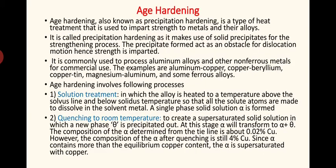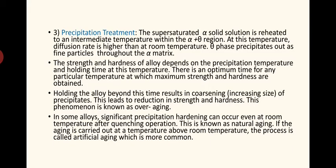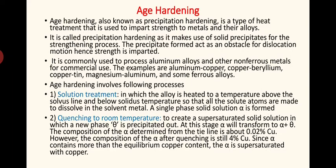In age hardening there are three steps. The first is solution treatment, in which the alloy is heated to a temperature above the solvus line and below the solidus temperature, so that all solute atoms dissolve in the solvent metal. This means a single-phase solid solution alpha is formed. We heat the alloy to a temperature within this range — below solidus and above solvus — so that we have a solid solution of alpha.